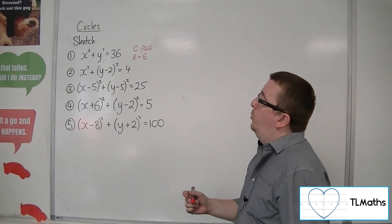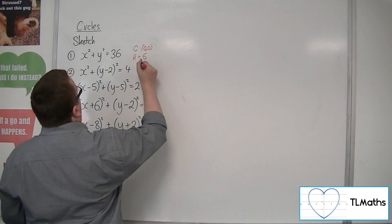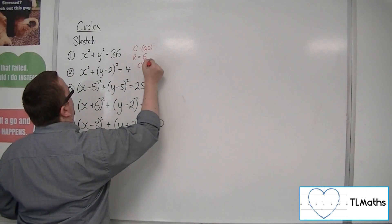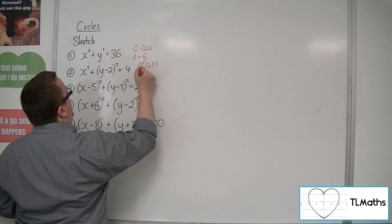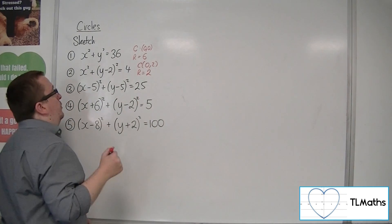So number 2, x squared plus y minus 2 squared equals 4. So this would have a centre of 0, 2, and a radius of square root of 4, so 2.